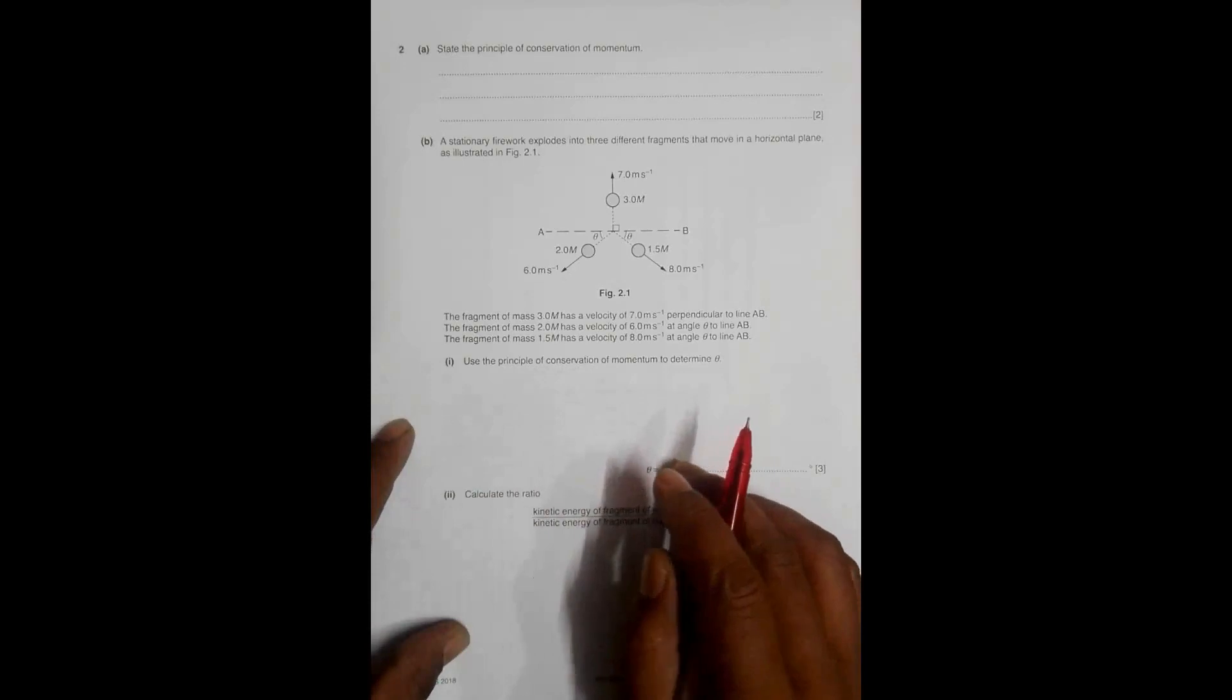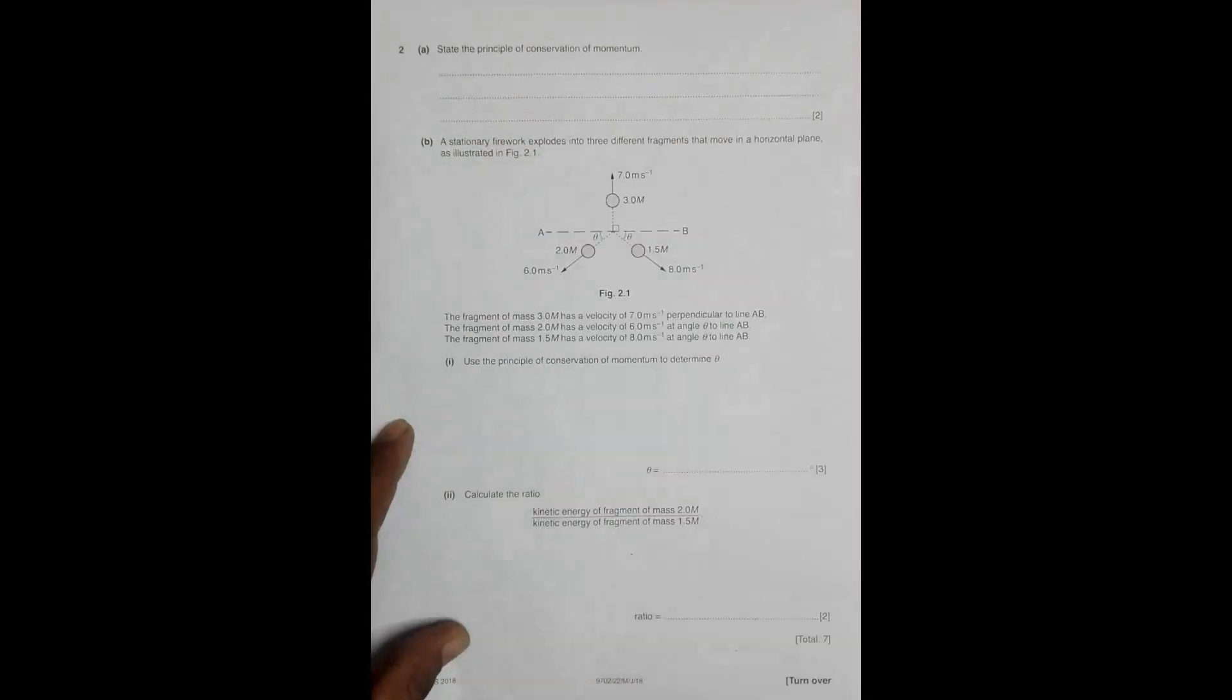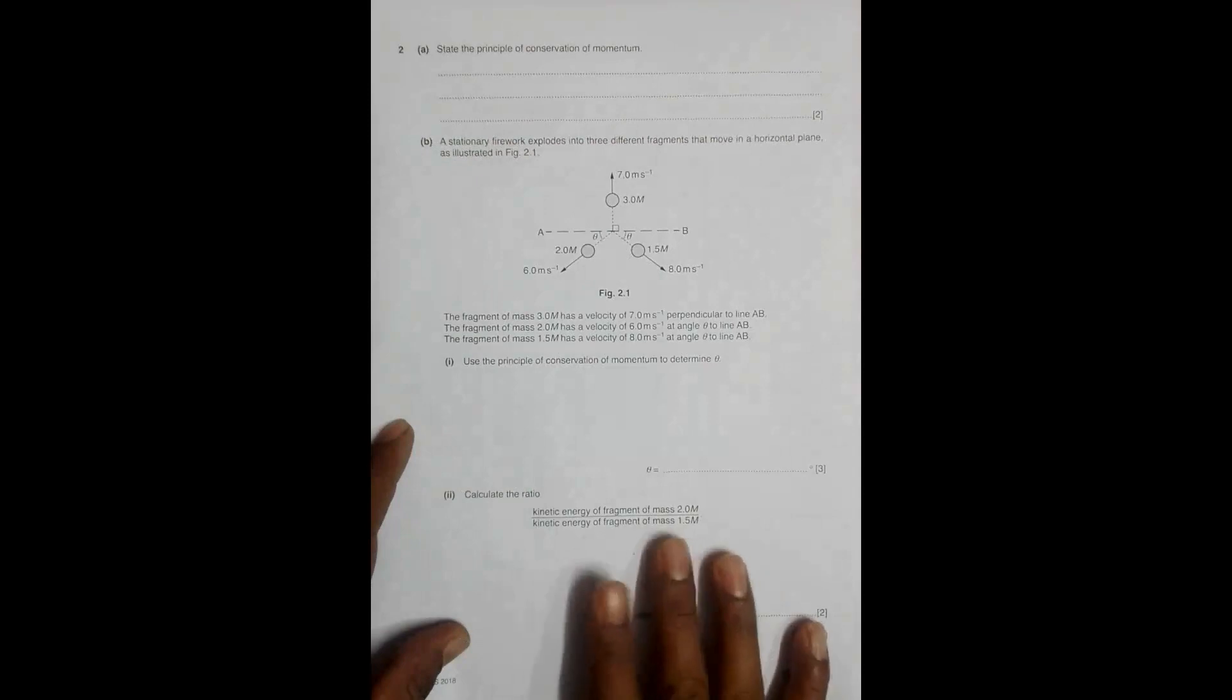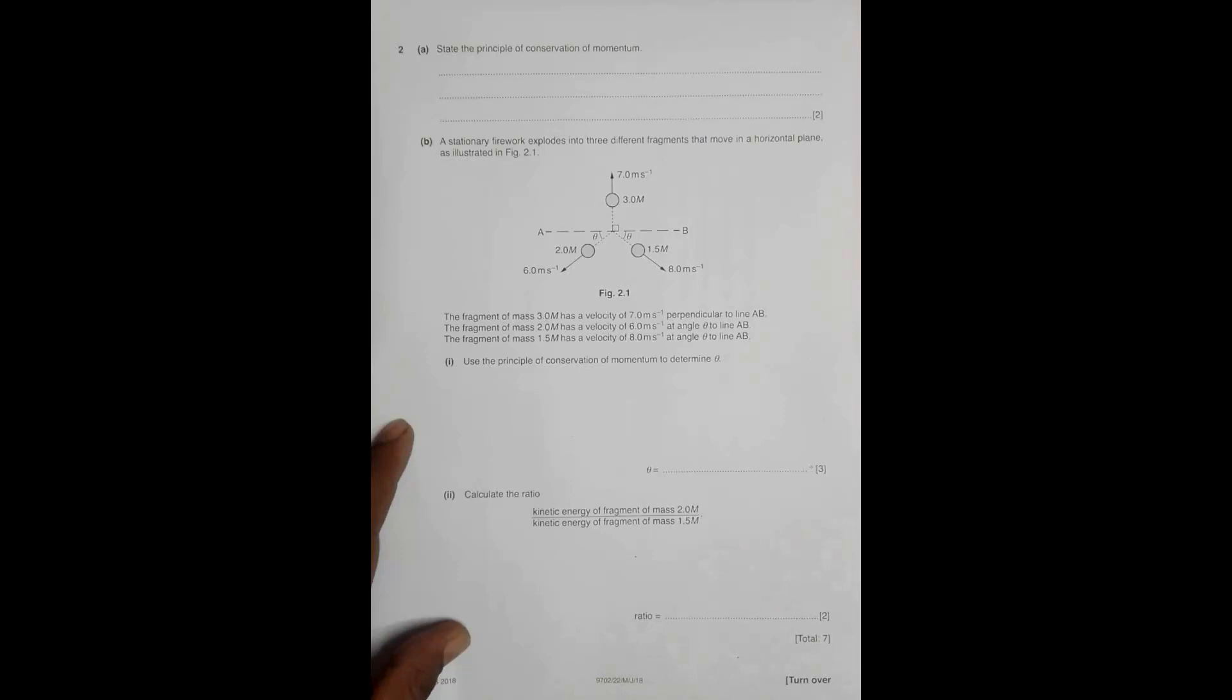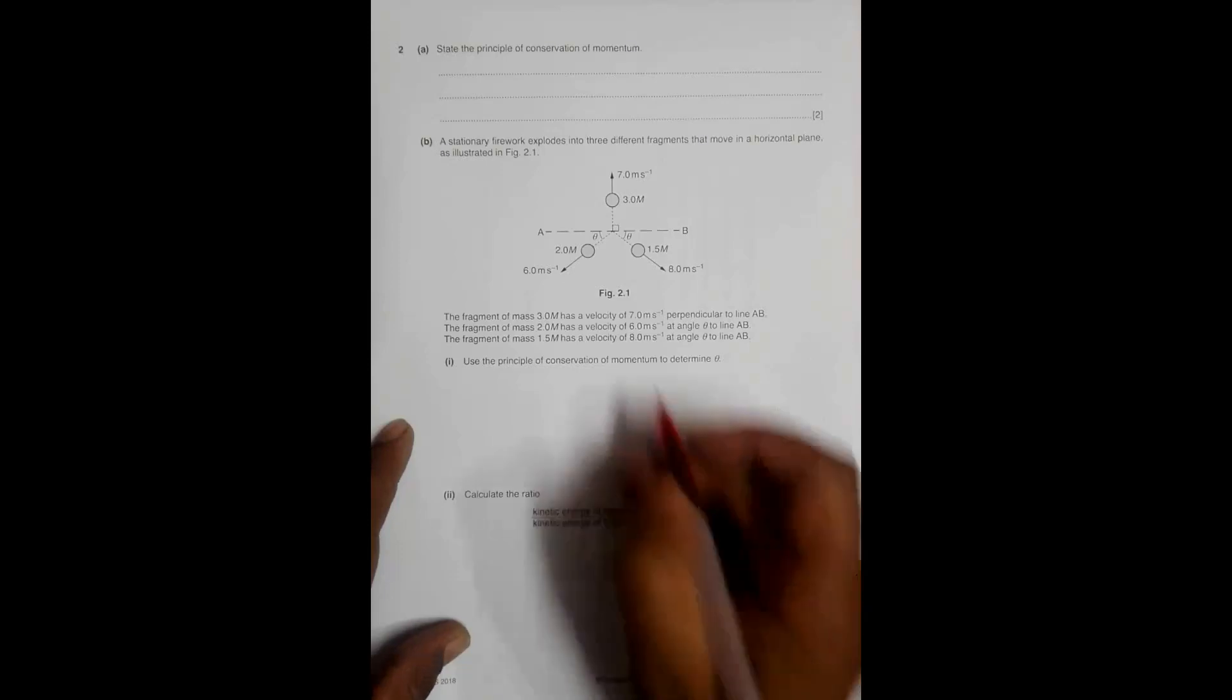According to the principle, if a body is traveling in a direction both before and after collision, the momentum is conserved in that particular direction. That was for a one-dimensional equation. Here we have a two-dimensional type of motion, so let's consider only the horizontal direction.